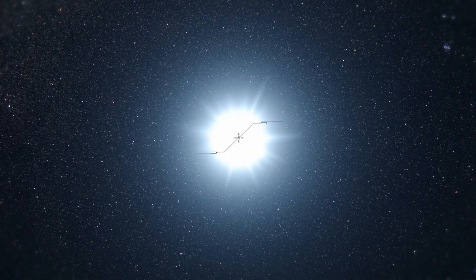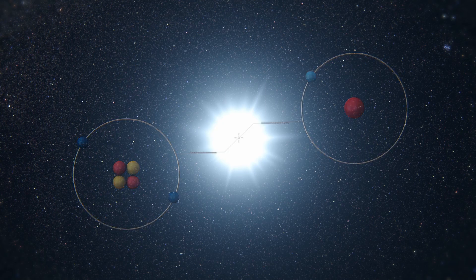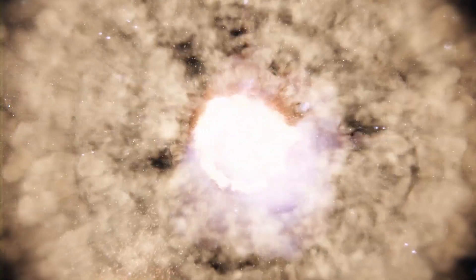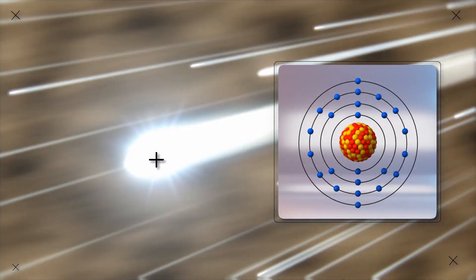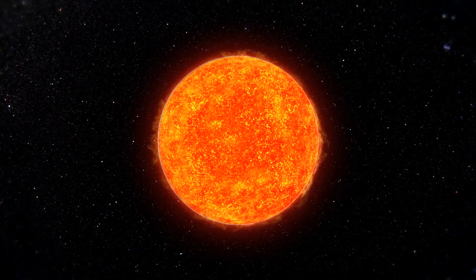The first stars were believed to be made of pure hydrogen and helium. When these stars die, they explode into supernovas and create metal elements. This explains why the red dwarf, a direct progeny of the first stars, contains so little iron.